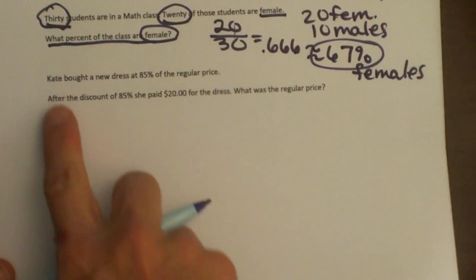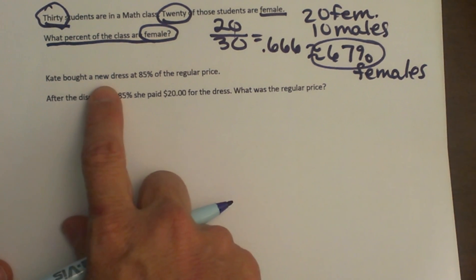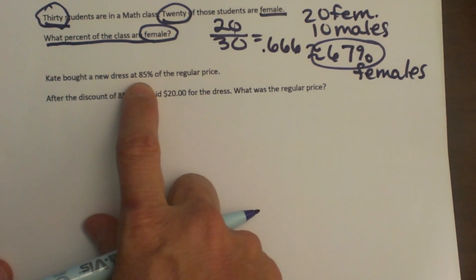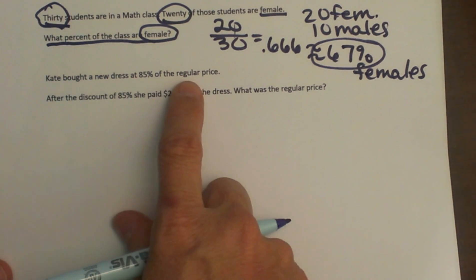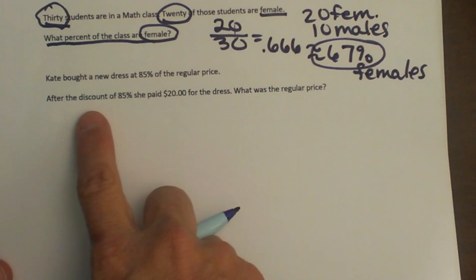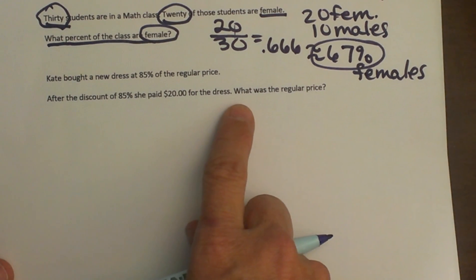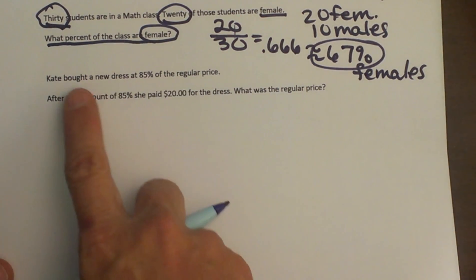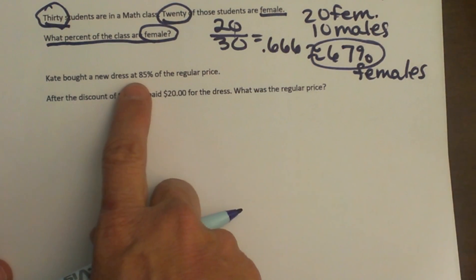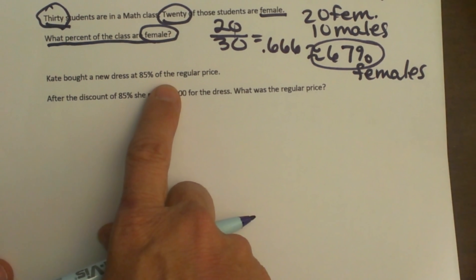Let's look at the last one. Kate bought a new dress at 85% of the regular price. After the discount of 85%, she paid $20 for the dress. What was the regular price? She bought a dress at 85% of the regular price. That means the sale price was 15% off.